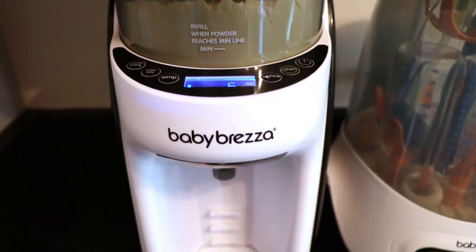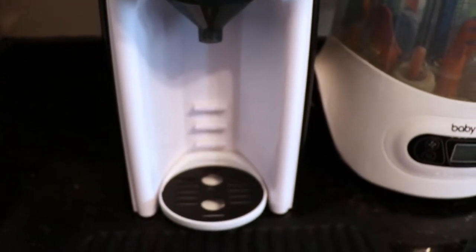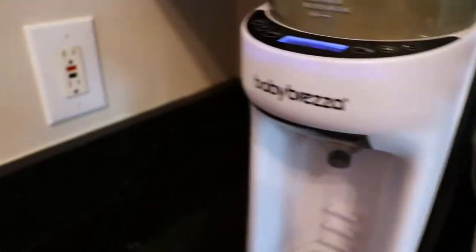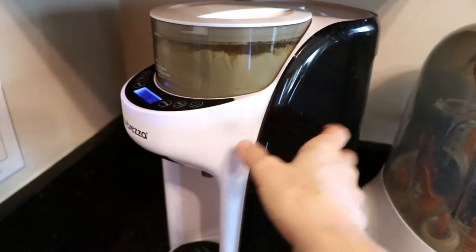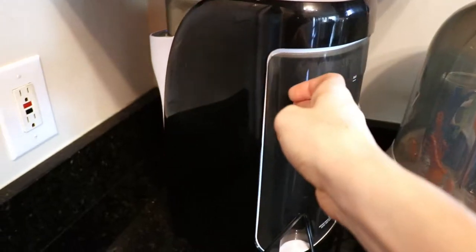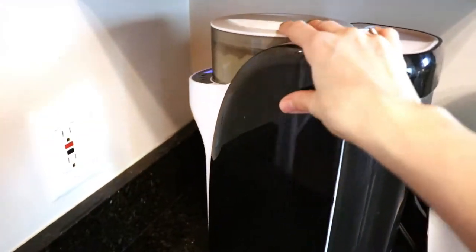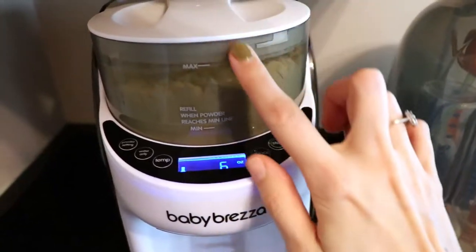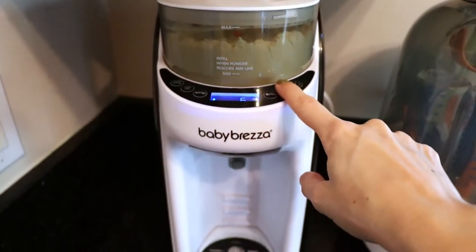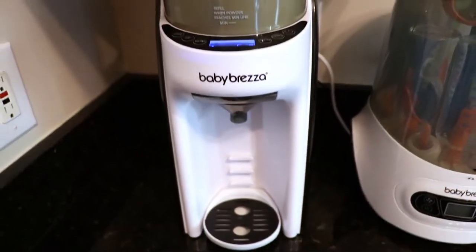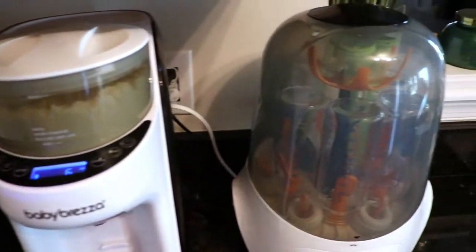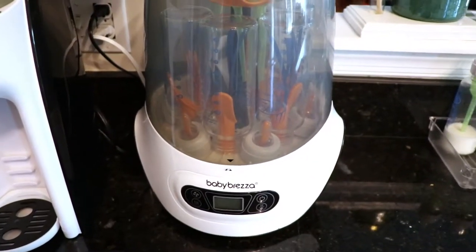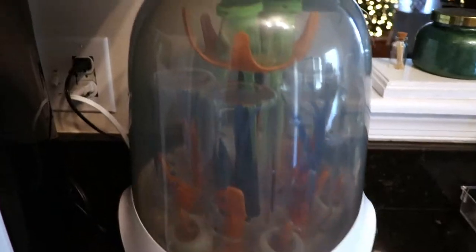First in this category is the Baby Brezza Formula Maker Pro Advanced. And this was amazing for those that are doing formula. It was a life changer for us. It holds the water in the back reservoir and then in the front, it holds the formula in the top canister and it mixes it just kind of like a Keurig. You're able to press a button and it dispenses at the right temperature, the right amount, and there's no heating and mixing or anything like that. It's all done.